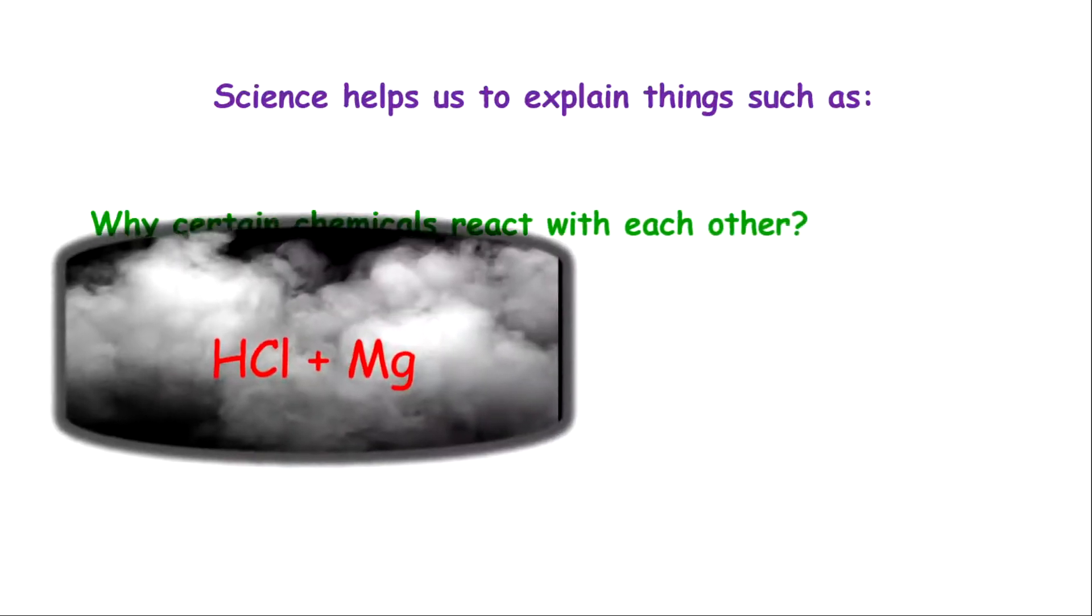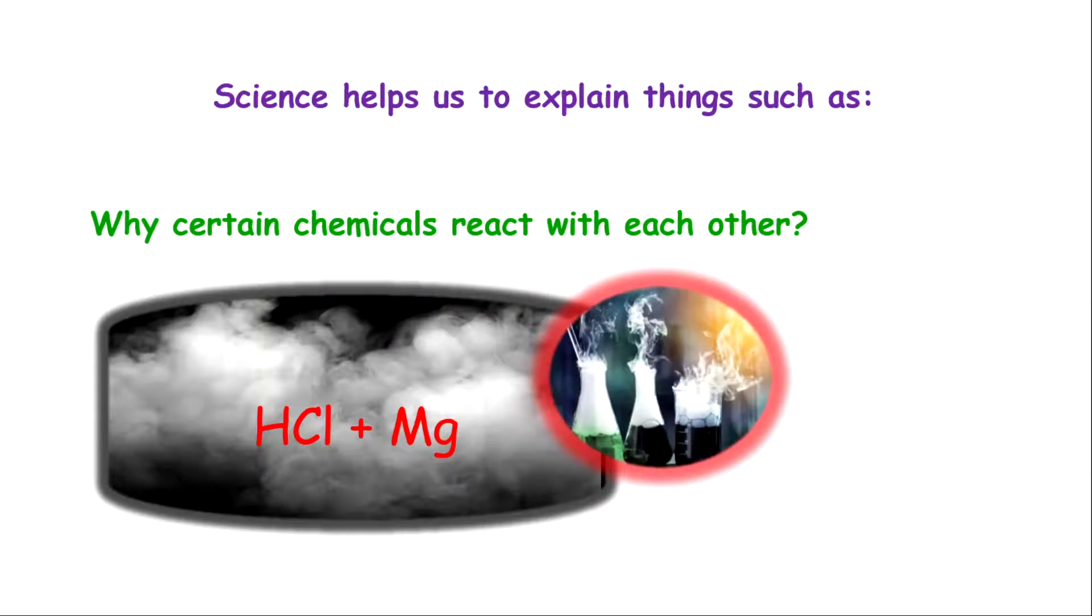Science also helps us to explain how chemicals react with each other. Take for example how metals react with acids to produce hydrogen gas, and how some metals cannot react with acid, for example copper, silver, or gold. If the reactivity of the acid is at a certain point or the metal is at a certain reactivity series, then it will not be able to react with the acid. So we can clean silver and gold by using acid and the acid will not damage those jewelries.